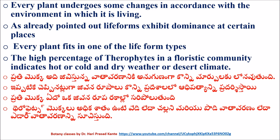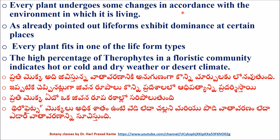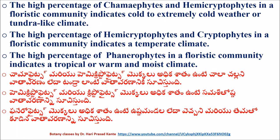Every plant undergoes some changes in accordance with the environment in which it is living. Life forms exhibit dominance at certain places, and every plant fits in one of the life form types. The high percentage of therophytes in a floristic community indicates hot or cold and dry weather, or a desert climate. The high percentage of therophytes and cryptophytes in a floristic community indicates cold to extremely cold weather, or a tundra-like climate.